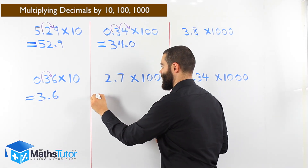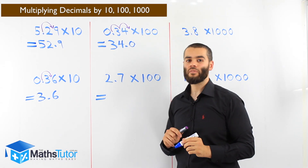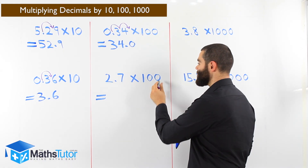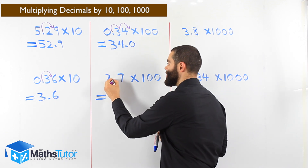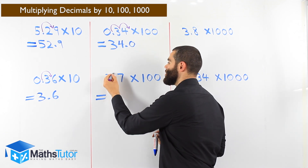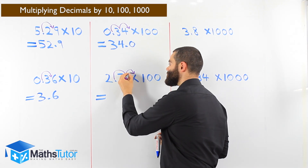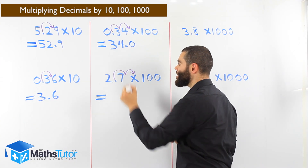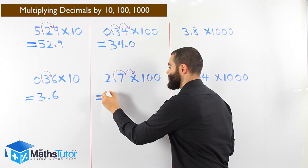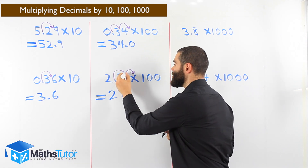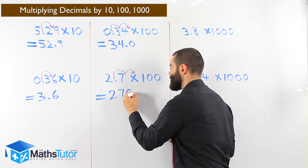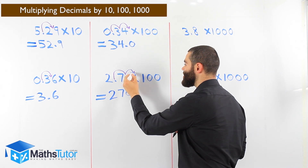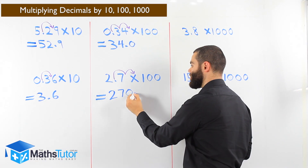Let's see if you can do this one: 2.7 times a hundred. Again, the hundred has two zeros — very important to realize that. Two zeros means we are jumping to the right twice. We grab it and say, you need to move twice to the right. Once, twice. We've jumped over the seven, and then jumped over nothing — nothing means zero. So our answer is 270. We jump over the seven and jump over the zero, then put our point.